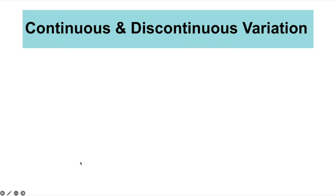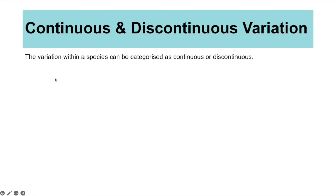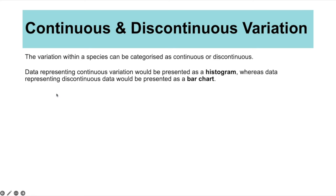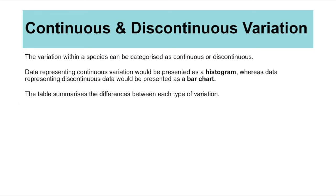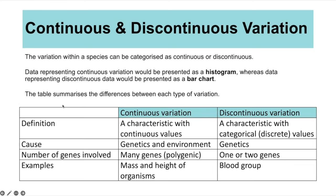Thinking about variation, we can categorise it as continuous and discontinuous. Data representing continuous variation is presented as a histogram, whereas discontinuous variation data is represented as a bar chart. Continuous variation involves characteristics with continuous values — for example height, plant height, or birth weight — whereas discontinuous variation involves categorical, discrete values, such as which blood group you have.